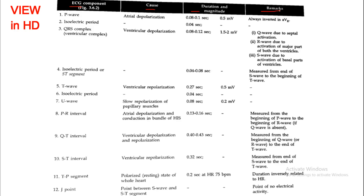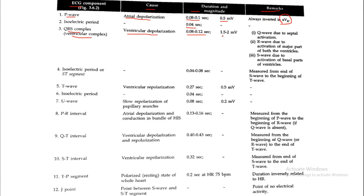Please watch this slide on HD video. First, the P wave, which represents atrial depolarization: normal duration is 0.08 to 0.1 second, magnitude is 0.5 millivolt, and it is always inverted in the AVR lead. Next is the isoelectric period between the P wave and QRS complex, with a duration of around 0.04 second. The QRS complex, also known as the ventricular complex, causes ventricular depolarization: duration 0.08 to 0.12 second, magnitude 1.5 to 2 millivolt.